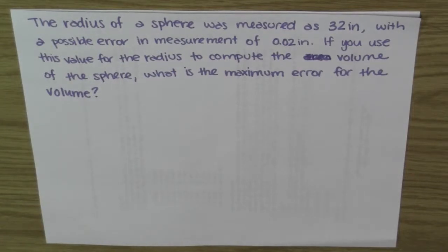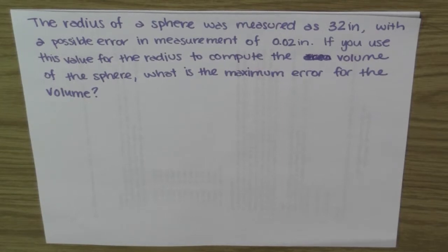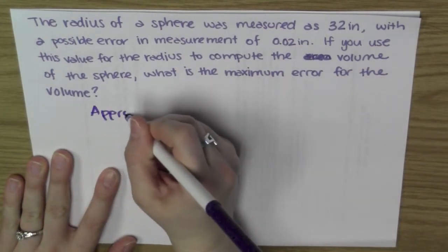Here we have an error problem. The radius of a sphere was measured as 32 inches with a possible error in measurement of 0.02 inches. If you use this value for the radius to compute the volume of the sphere, what is the maximum error for the volume? So we're going to approximate the maximum error using differentials.